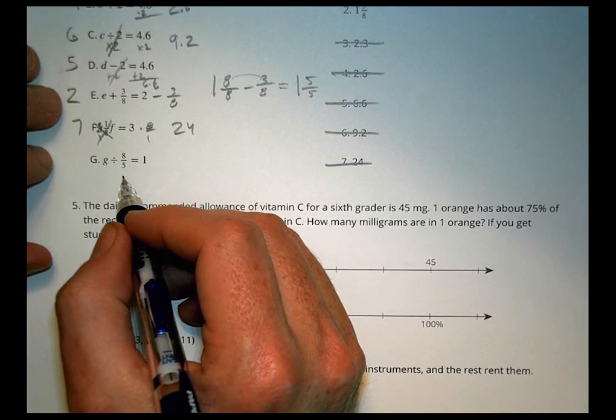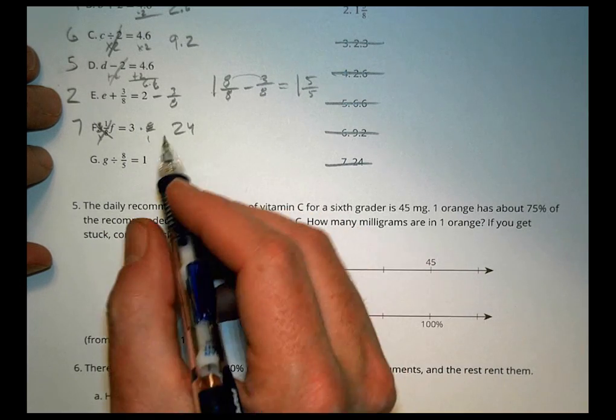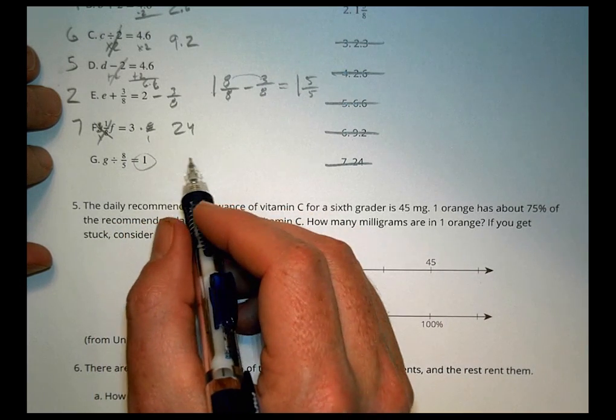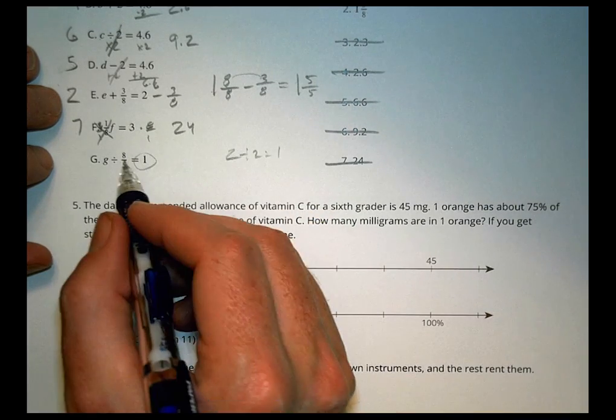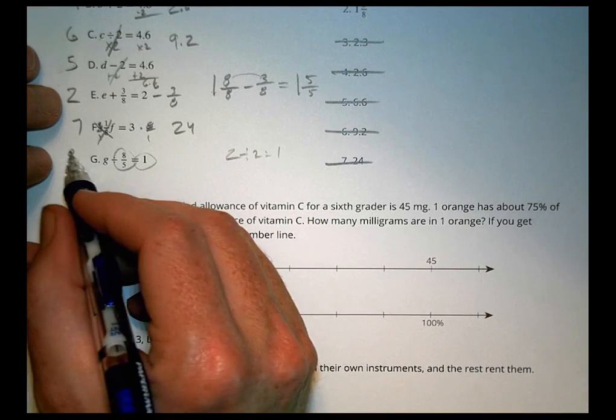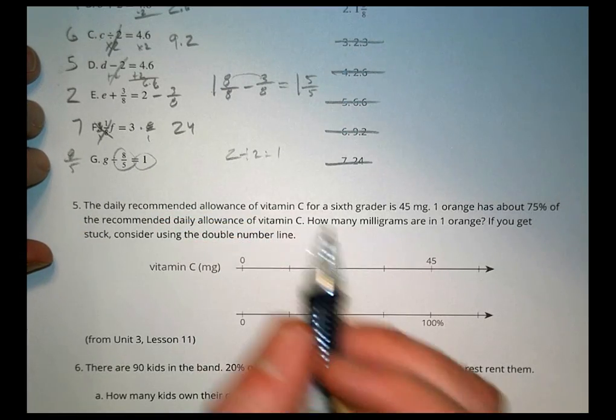What number divided by 8 fifths is equal to 1? Well, if you want to get equal to 1, you're going to do something like 2 divided by 2 equals 1. The number is going to be the same. So what number is this? It's 8 fifths. So 8 fifths divided by 8 fifths is equal to 1.